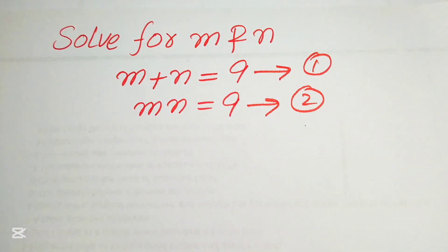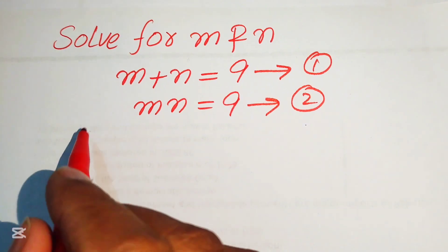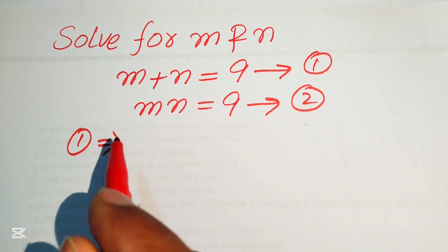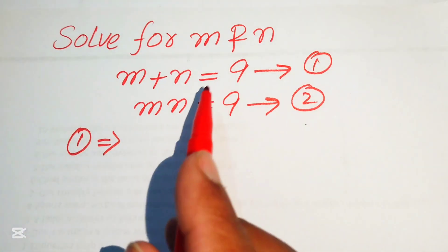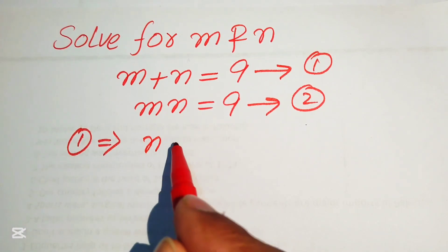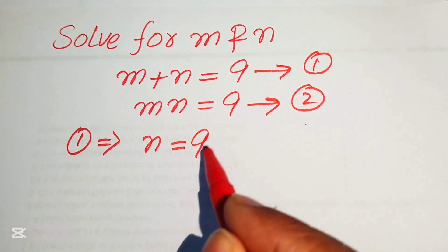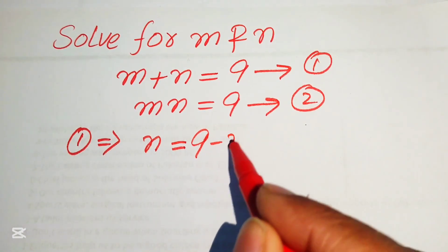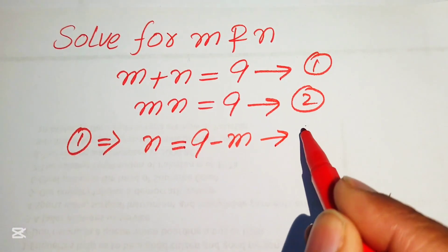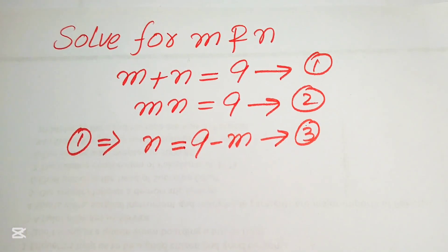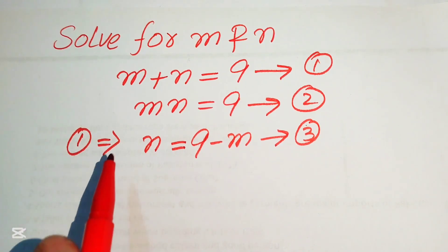Now we focus on equation number 1. It implies that we move m to the right hand side, and it will be written as n equals 9 minus m. We call this equation number 3.